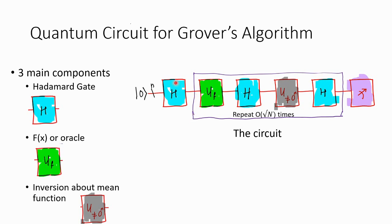You have a Hadamard gate, then your f — which is basically the f(x) function or oracle. As said earlier, if you give 4 here it will give a 1 as output; everything else will be 0. That is the U_f.